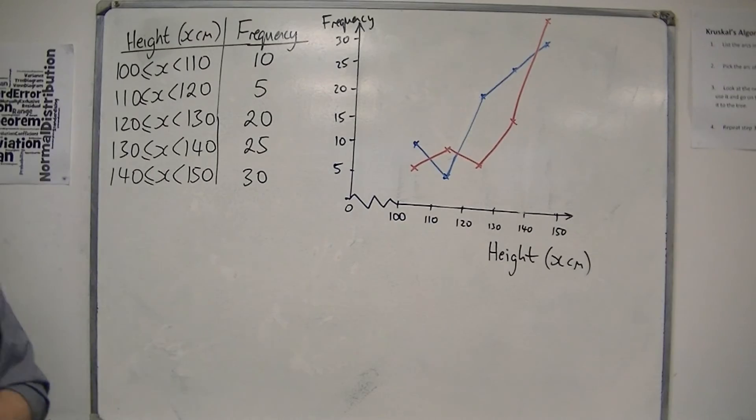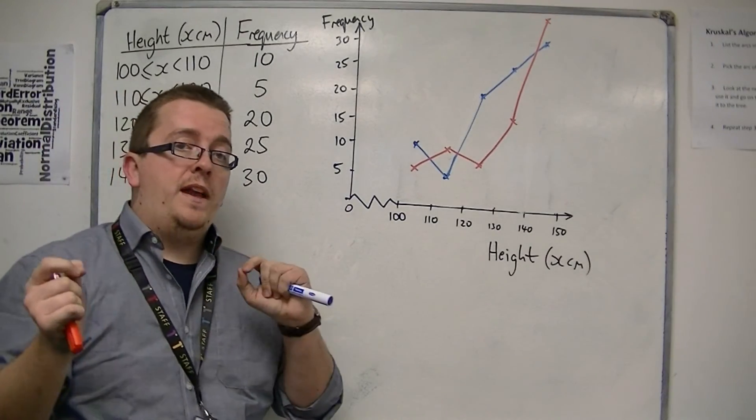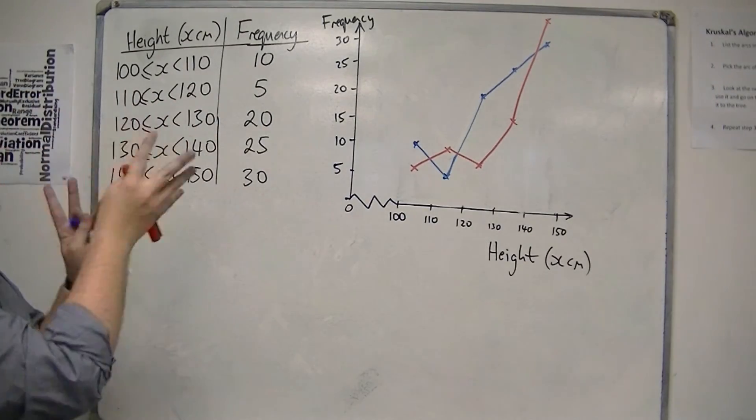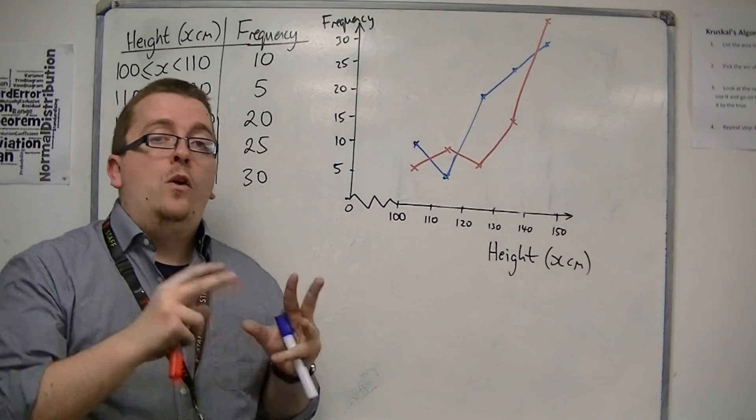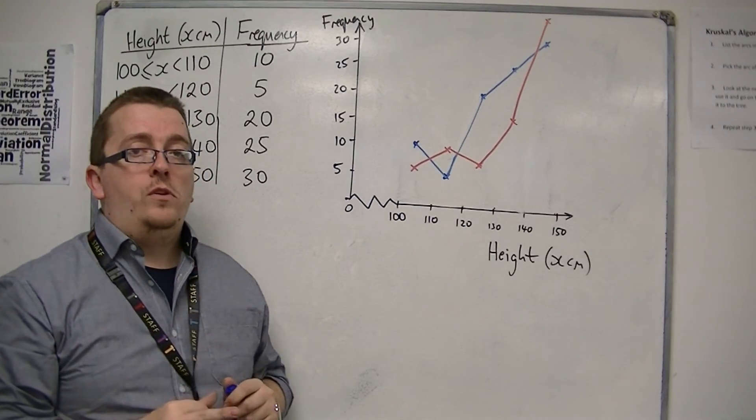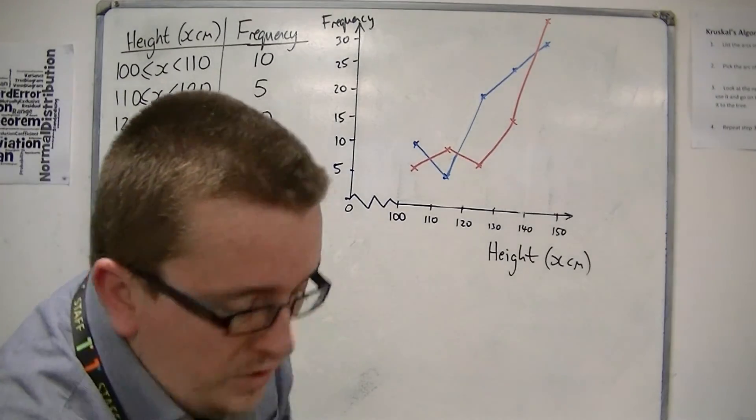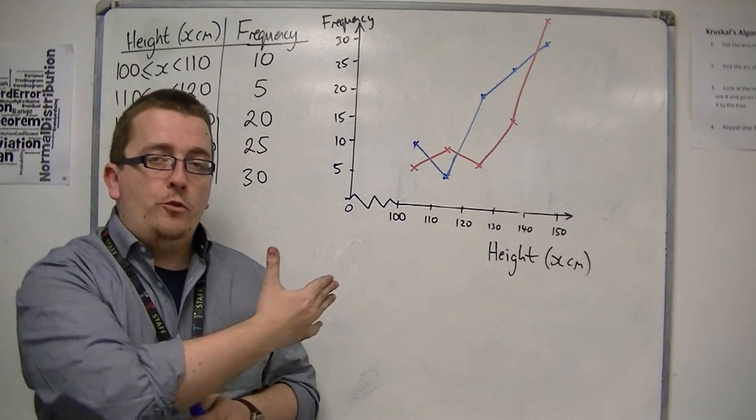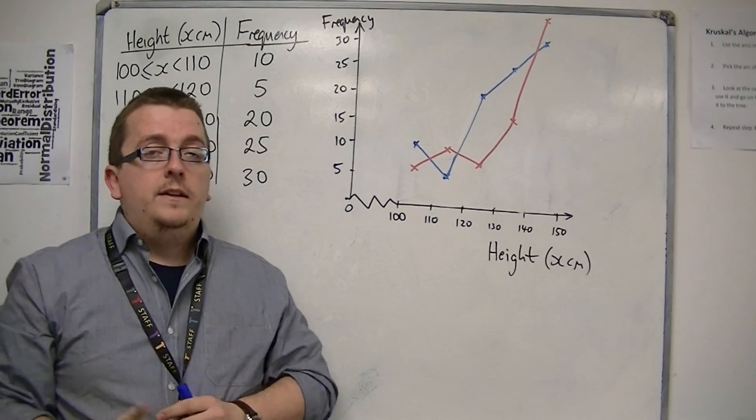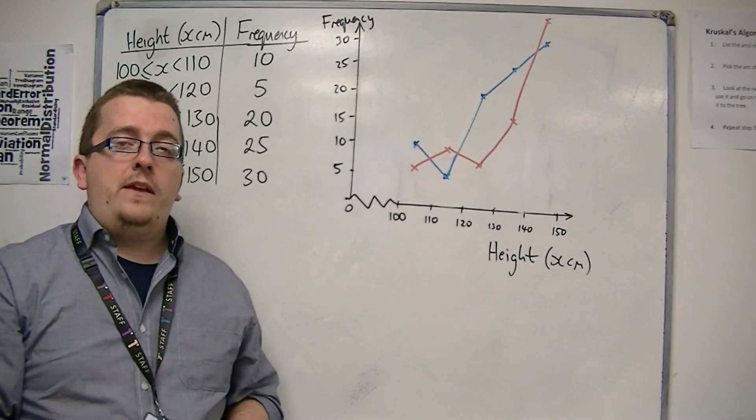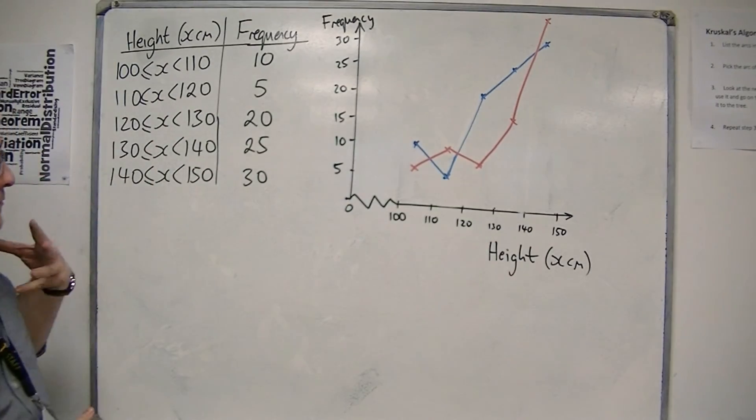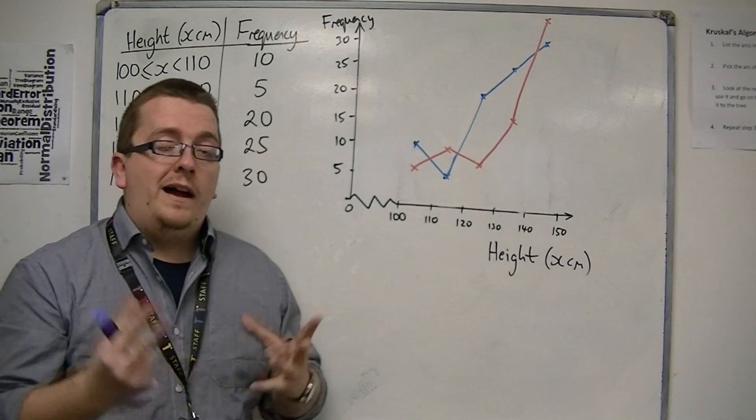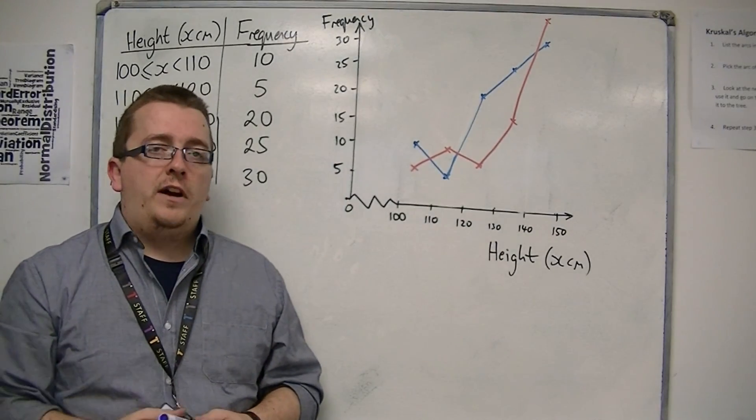And with the two sets of data, one on top of the other, it is then much easier for me to compare what the two pieces of data are showing. So you might be asked to draw another frequency polygon on top of an already drawn graph in order for you to then compare the two. That is how they're drawn, and that is their link to frequency diagrams.